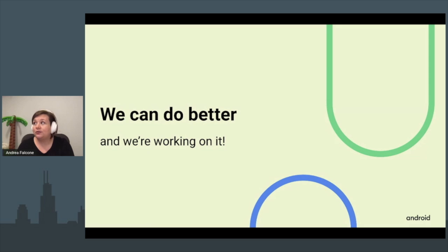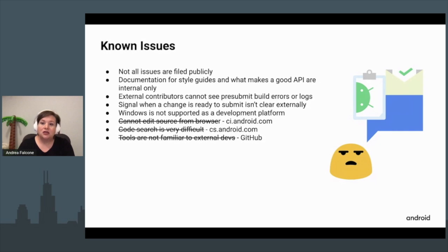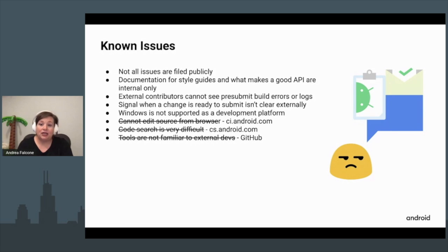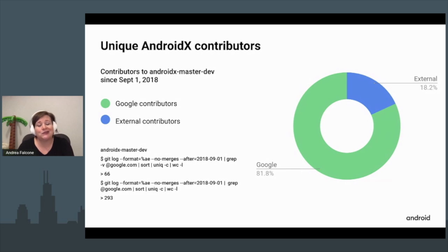Our team can definitely do better — there are a number of things that aren't great about the contribution workflow, as you can see from the web editor and the GitHub announcements, and this is getting attention from our team. Since September 2018 we've had quite a few external contributors — 66 in AndroidX — which is up from 48 contributors when I gave this talk in July. I think that's really awesome.